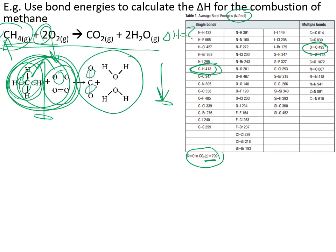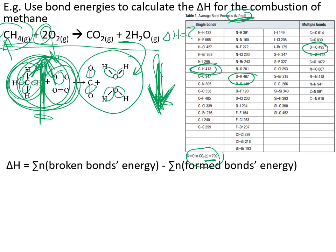For the products, carbon dioxide has two C=O double bonds, each at 799 kilojoules per mole, giving two of them. The two water molecules, when drawn out, contain a total of four oxygen-hydrogen bonds. Looking up the O-H bond energy gives 467 kilojoules per mole, and there are four of them. This total is the energy we get out when forming the product bonds.